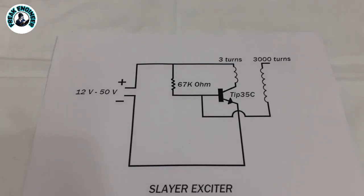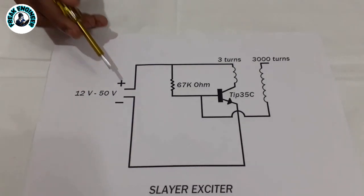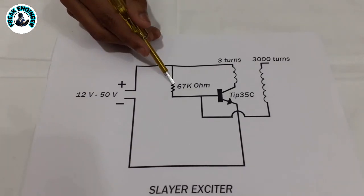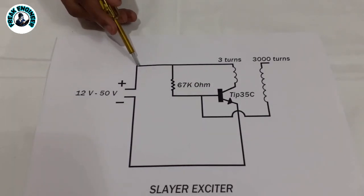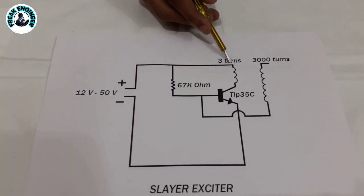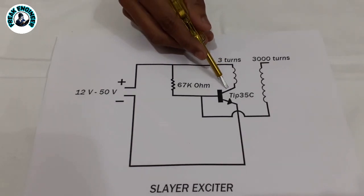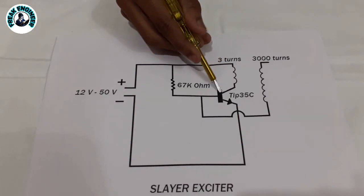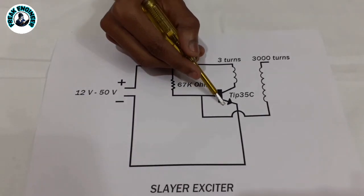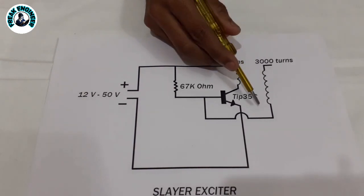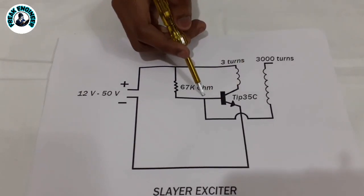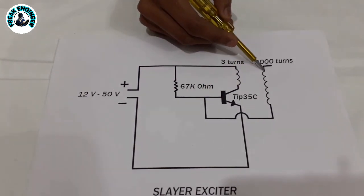Here is a circuit diagram which is commonly known as slayer exciter. The positive terminal of the power supply is connected to a 67 kilo ohm resistor, which is further connected to the base of the transistor. The positive terminal is also connected to the primary winding. The other side of the primary winding is connected to the collector pin of the transistor. The emitter pin of the transistor is directly connected to the negative terminal of the power supply. The lower side of the secondary winding is connected to the base of the transistor, and the upper side is connected to the top load, which creates capacitance with the surrounding.